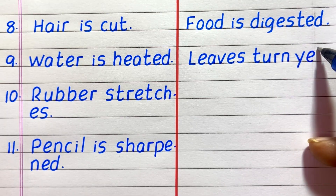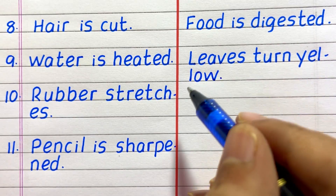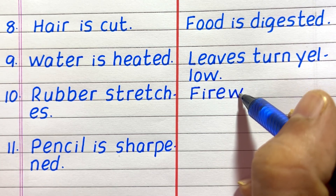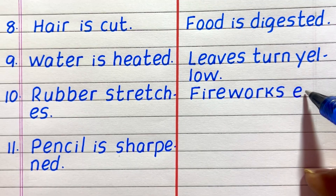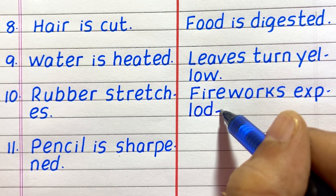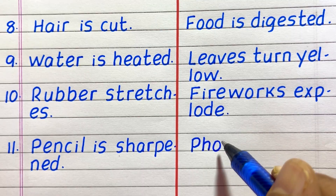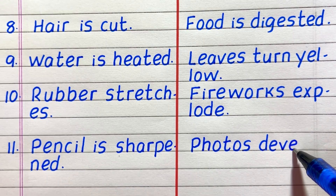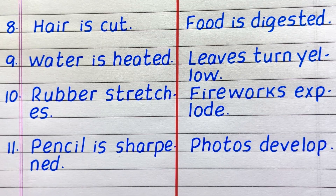Ninth example of a chemical change is leaves turn yellow. Tenth, fireworks explode. Eleventh, photos develop.